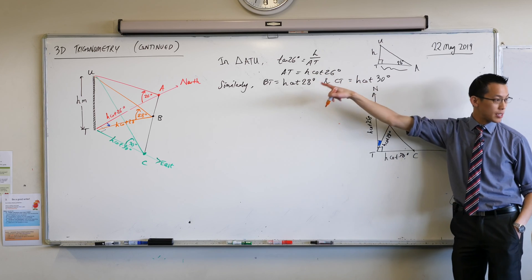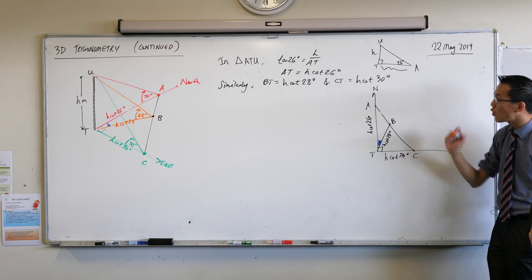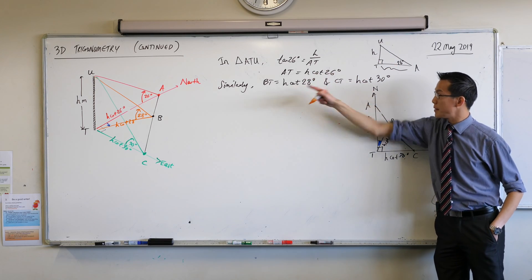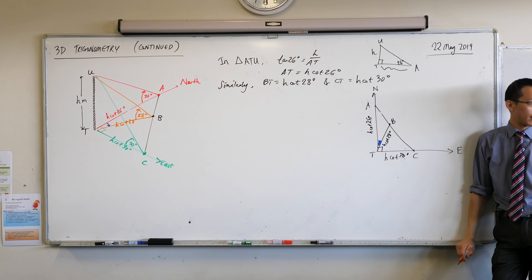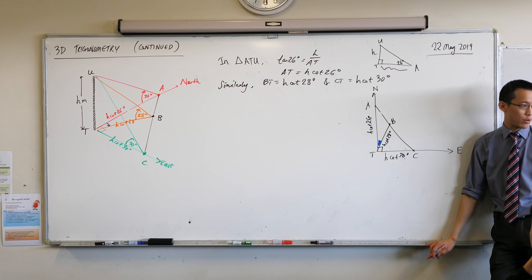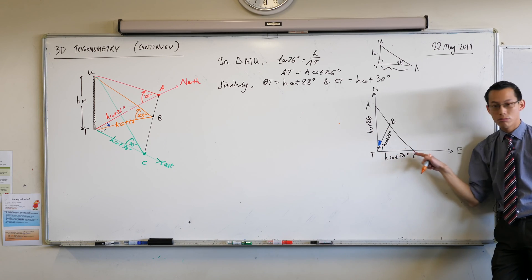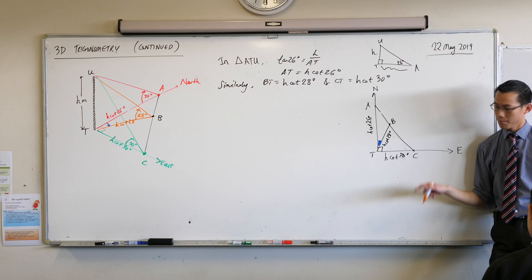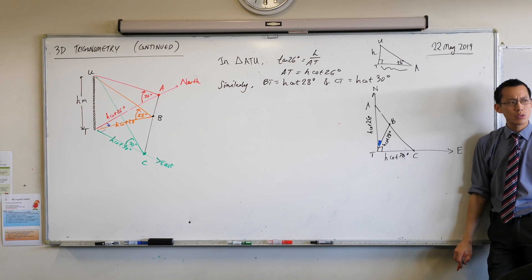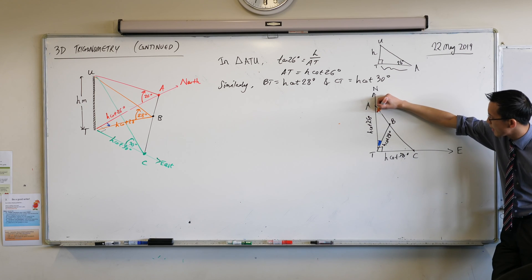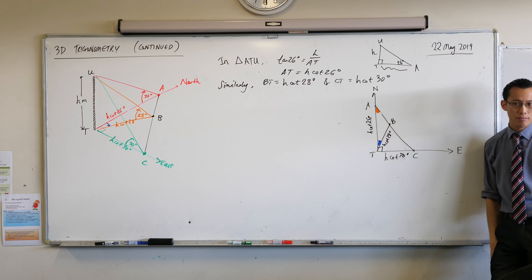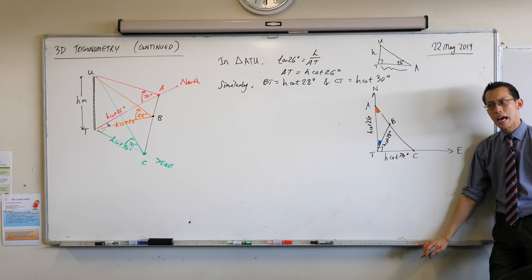We could make all of these statements here. We could make all those statements because these AT, BT, and CT, they all sat in right angle triangles. Remember that? I have another right angle triangle here, a different one, and it has these two lengths in it. Could I use those two lengths to work out, say, this angle up here? Could I do it? How would I do it? Opposite and adjacent in this ACT right angle triangle.